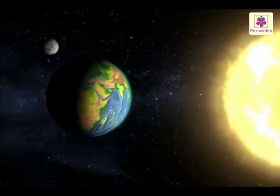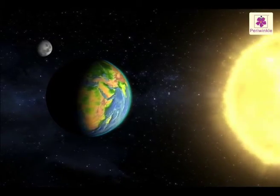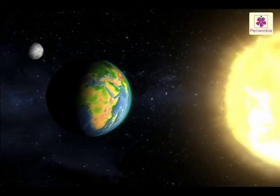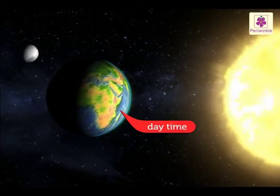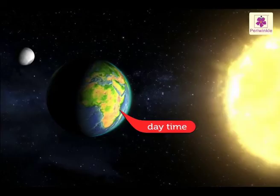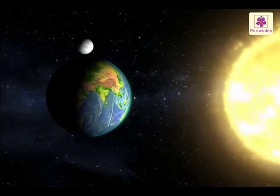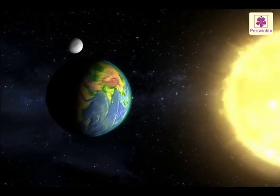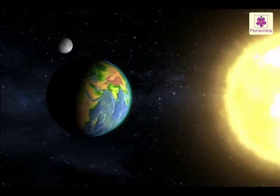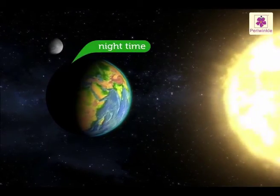That part of the Earth which faces the Sun receives sunlight. It is daytime there. The side of the Earth which is away from the Sun does not receive any sunlight. It is nighttime there.